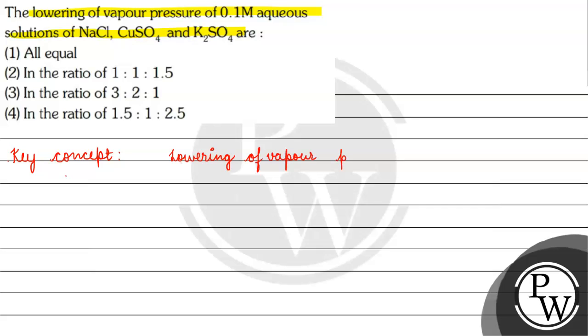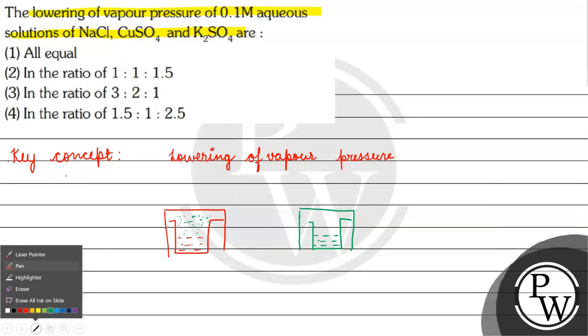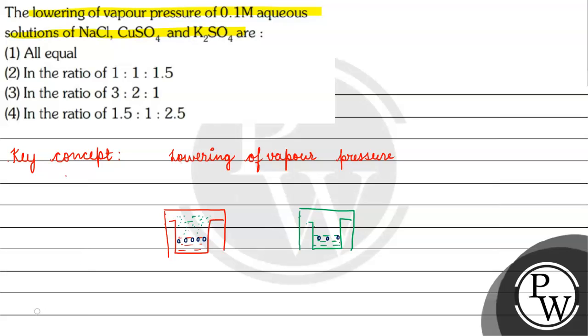If we have pure solvent, the solvent particles which have more energy will go into the vapor phase. When we add a non-volatile solute to the pure solvent, we now have both solvent particles and solute particles present.